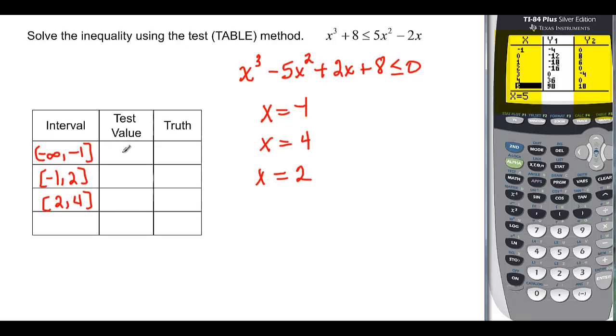Those should be all the values I need. So a test value that's smaller than negative 1, I'll try negative 2. And then I'll go look at my table to figure it out instead of plugging and chugging. From negative 1 to 2, I can see a 0 happens in there. So I'm going to try 0. And between 2 and 4, well, that would be 3. And actually, I should do from 4 to infinity. I forgot about that one. And so I'll try 5.